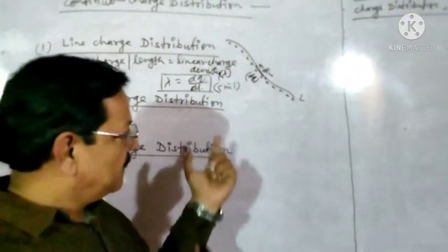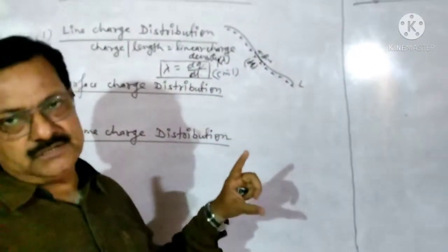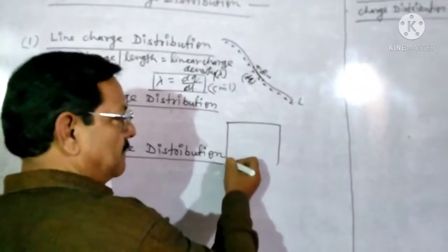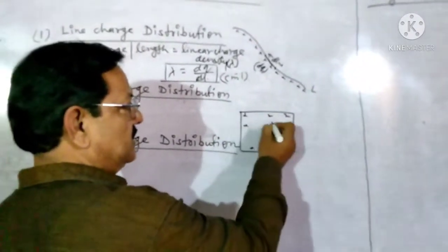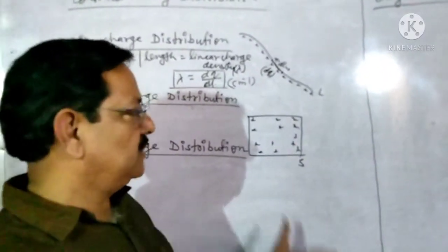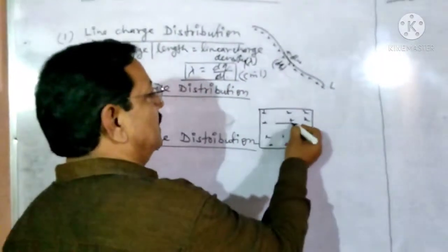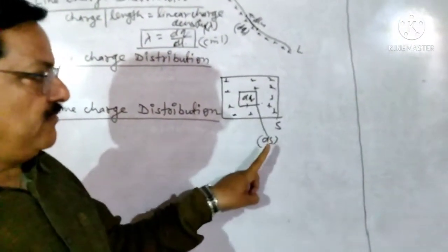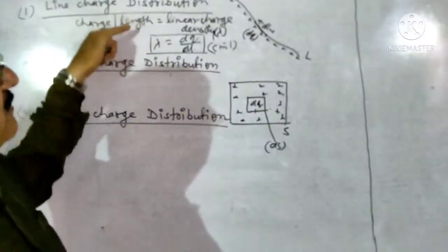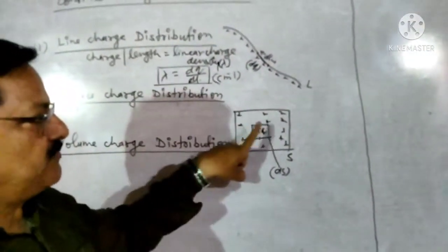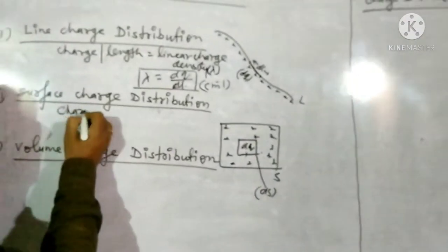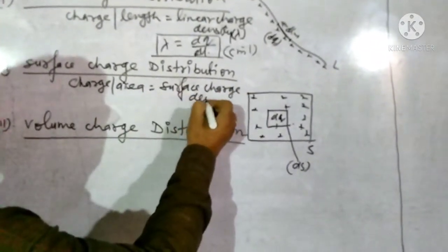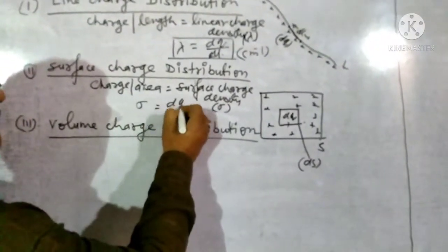Now the second one: surface charge distribution. Just as charge per unit length is called linear charge density, in the same way charge per unit area is called surface charge density. It is represented by sigma, so sigma equals DQ upon DS. Its unit is coulomb per meter square.